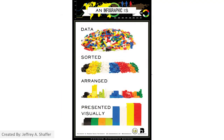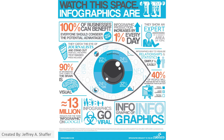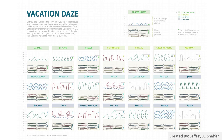Here is an infographic describing what an infographic is. We have data, we organize data, arrange the data, and also present it visually. Normally, infographics are designed as both art and also communication. This is another example showing that infographics have become a standard form of communication, but they have also been designed as art.